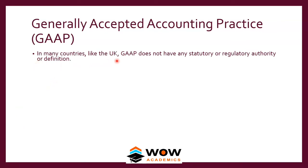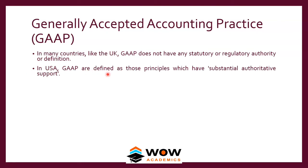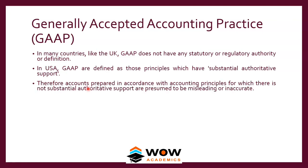In many countries like the UK, GAAP does not have any statutory or regulatory authority — it is not mandatory to follow IFRS, though companies can do so voluntarily. In the USA, GAAP is defined as those principles which have substantial authority to support them. In certain countries, the generally accepted accounting practices are compulsory — if you do not follow them you will be fined. India also works that way, with fines for companies that do not follow accounting rules and regulations.